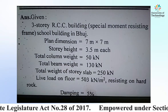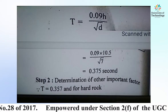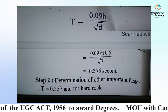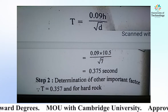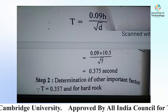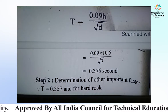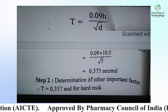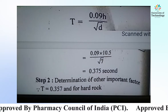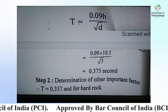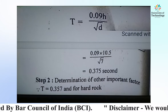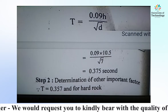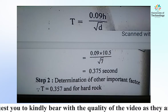Step 1: We have to calculate the natural period of vibration. In case of an earthquake, capital T is given by the formula T = 0.09h / √d. Total height h = 3.5 × 3 = 10.5 m and d = 7 m. So we get the value of T = 0.375 seconds. This is the natural period of shaking.